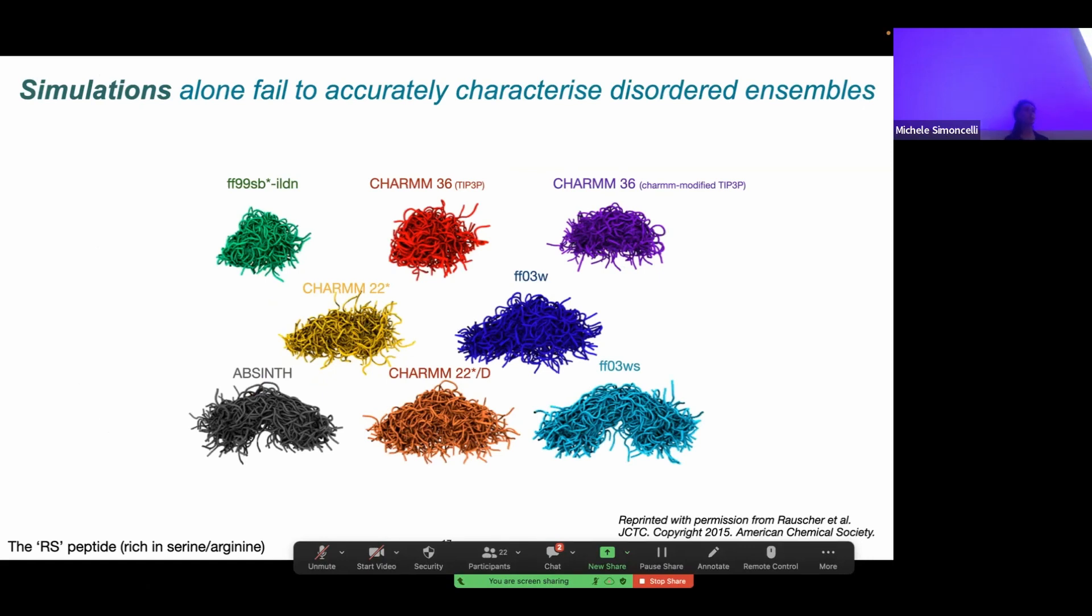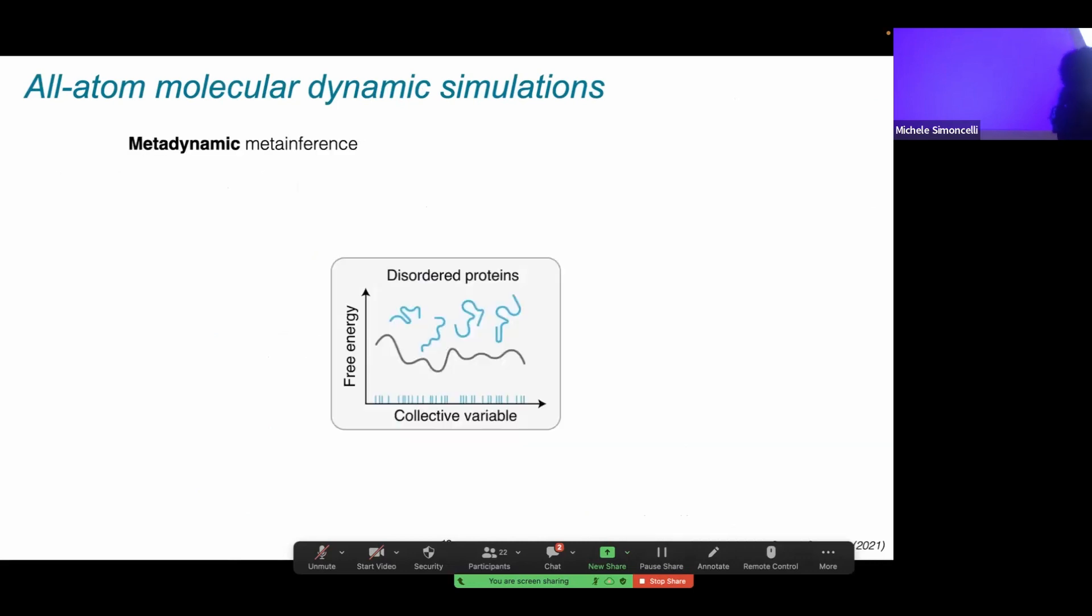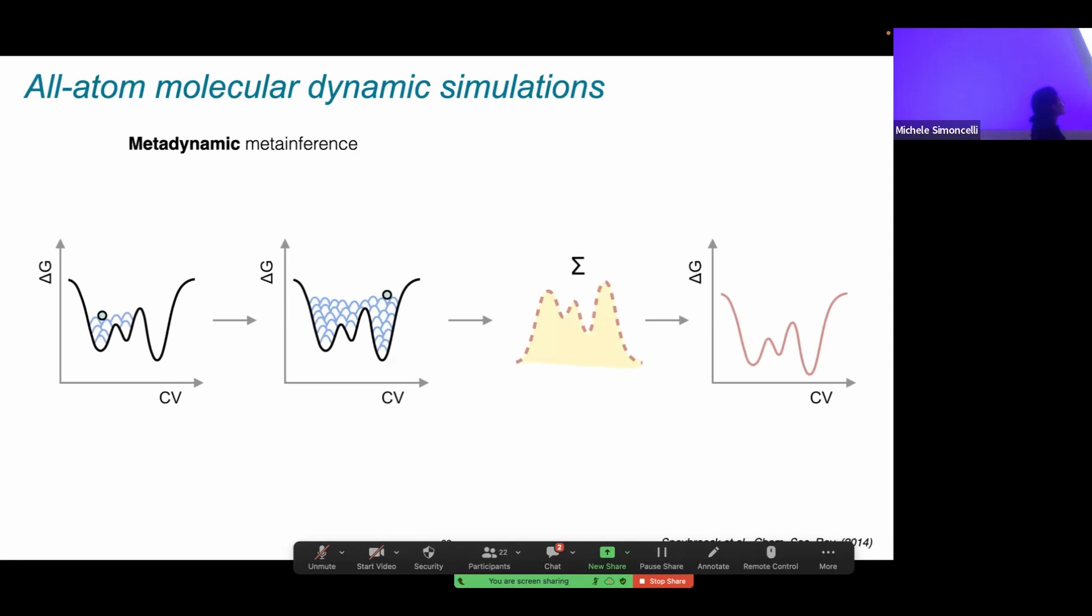As a way to make sure that we are really representing what the experiments are telling us, we use an approach called metadynamic meta-inference. I'm going to first start by explaining meta-inference. Meta-inference is a Bayesian approach that allows us to combine prior information, in this case coming from our force fields, with the data likelihood, which in this case is going to come from our NMR data. What we can get out of it is a posterior ensemble that maximizes the agreement between the two approaches. On top of this, we use metadynamics, which is an enhanced sampling technique that allows us to get full coverage of our very rugged free energy landscape. In particular, with metadynamics, we have a collective variable, for example, the radius of gyration, and we apply a bias to discourage our states from visiting states that it's already explored. But because we can remember these biases at the end of our simulation, we can then reconstruct our full free energy landscapes.